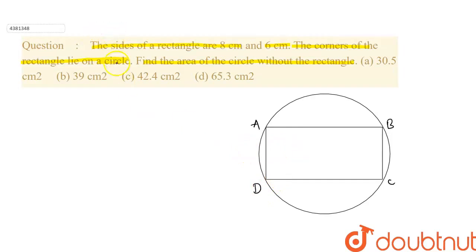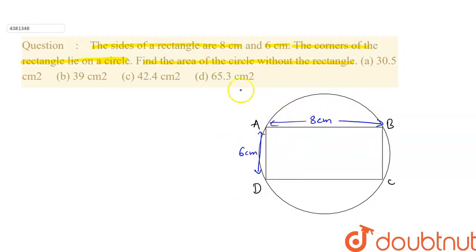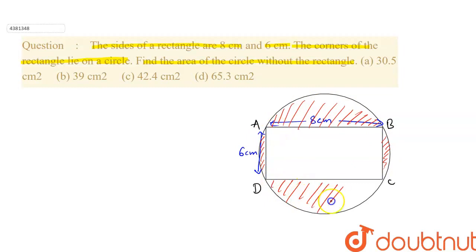The length of the rectangle is given as 8 cm and the breadth is given as 6 cm. We have to find the circle area. To find the required area, we need to find the shaded portion, which is the circle area minus the rectangle area.